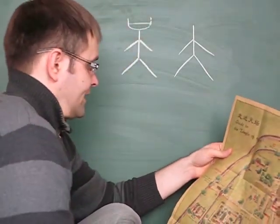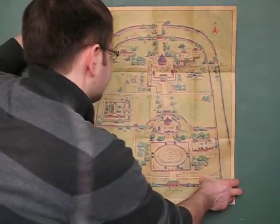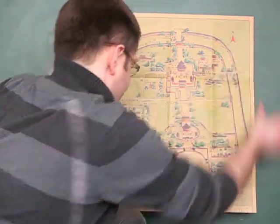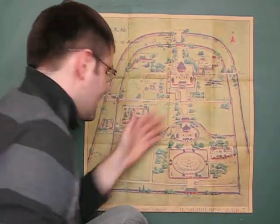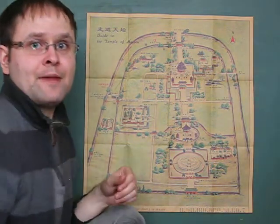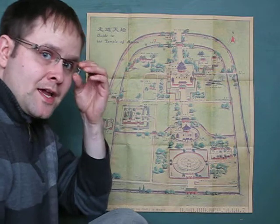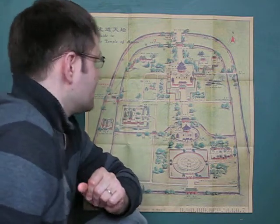The Temple of Heaven in Beijing. It's this park. This is a handwritten map of the park, Temple of Heaven in Beijing. Many people go there and look at these things.